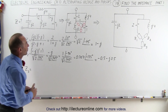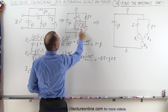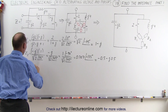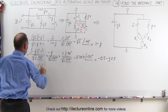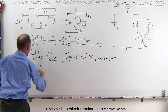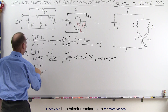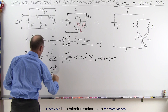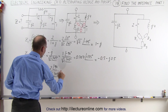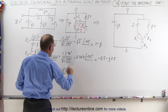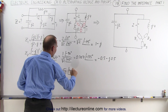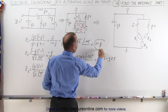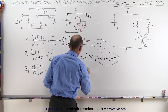Now for z3. z3 is between these two components, so we multiply them together and divide by the sum of all three. For z3 we get j2 multiplied times positive 1, divided by square root of 2 at 45 degrees. j2 gives us a magnitude of 2 at 90 degrees, divided by square root of 2 at 45 degrees, which equals square root of 2 at 45 degrees. That can be written as 1 plus j1. So now we have z1, z2, and z3.